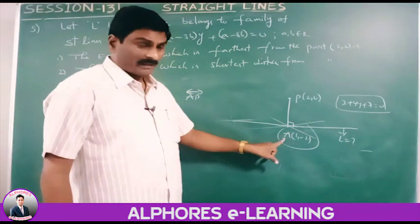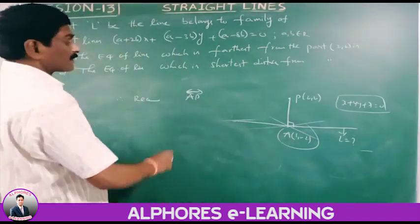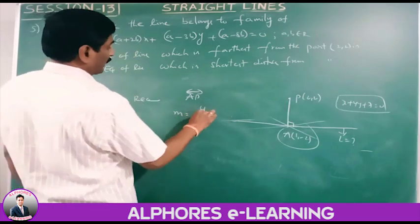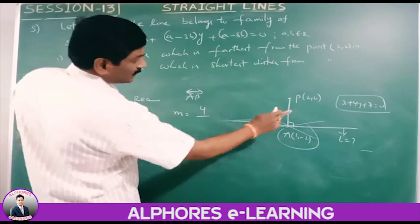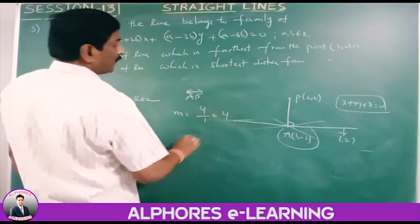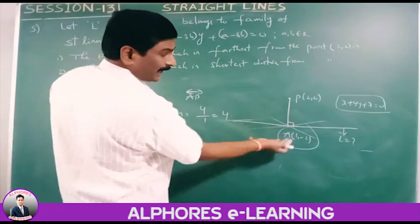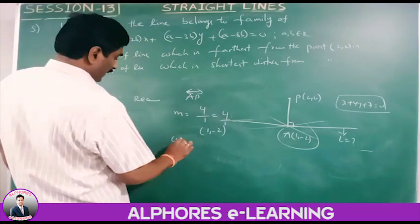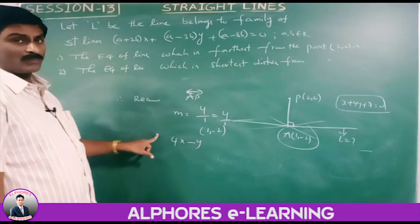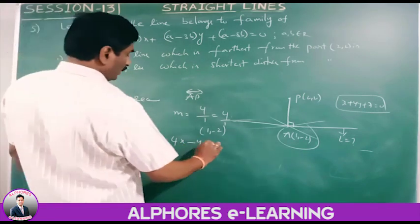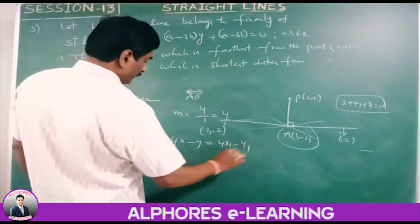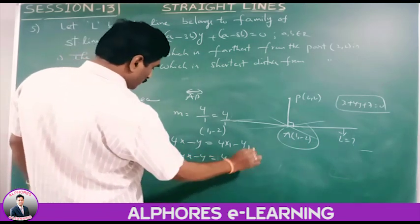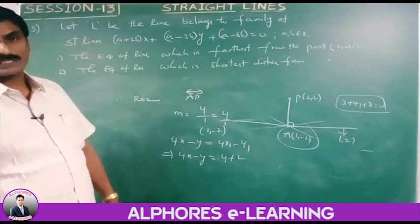The slope of the required line AP is m equals 4/1 equals 4. Using A(1, minus 2) as the point: 4x minus y equals 4(1) minus (minus 2) equals 4 plus 2 equals 6. So 4x minus y minus 6 equals 0. Alternatively, use the two-point form with A(1, minus 2) and P(2, 2) to get the same result.